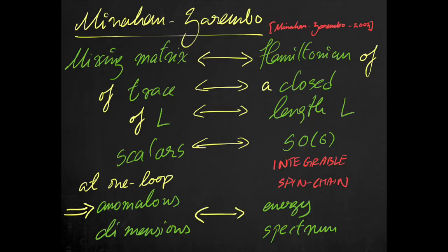Minahan and Zarembo showed a remarkable identification between the one-loop mixing matrix of a trace of L scalars of N=4 super Yang-Mills, and the Hamiltonian of a closed SO(6) spin chain of length L. Thus, they showed that at one loop, the spectrum of anomalous dimensions of such operators is given by the energy spectrum of this integrable spin chain.